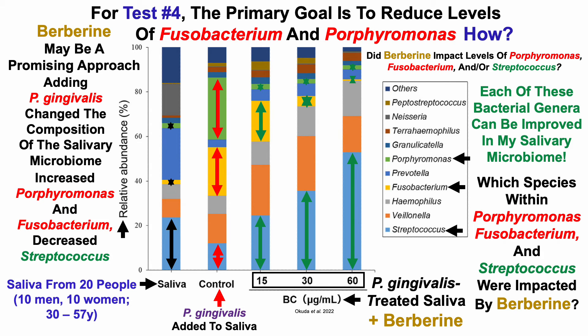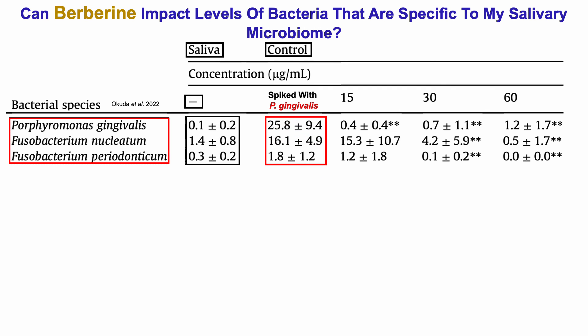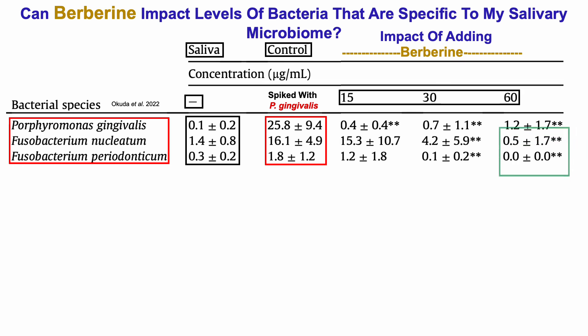Within which species were impacted by berberine? Starting with Porphyromonas gingivalis, and then the two Fusobacterium species — Fusobacterium nucleatum and Fusobacterium periodonticum. When comparing original saliva with the P. gingivalis-spiked controls, there was a big expansion of each of these bacterial species. When adding the highest dose of berberine, the sum of these three bacteria — 1.2% plus 0.5% — comes to 1.7%, almost identical to the amounts in unspiked saliva, even though these samples were spiked with P. gingivalis. So berberine can reduce levels of these three bacteria, which are relatively high in my salivary microbiome.